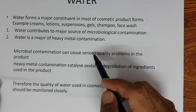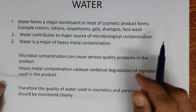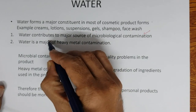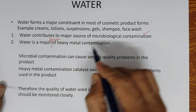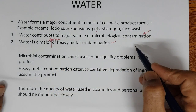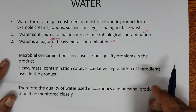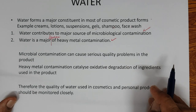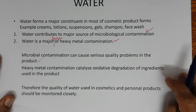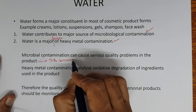What are the important things we have to address in water? Water contributes to a major source of microbial contamination in the product, and water is also a major source of heavy metal contamination. Microbial contamination can cause serious quality problems in the product. Especially, if pathogens are there, it can hurt the consumers — not only the product, but the consumers.